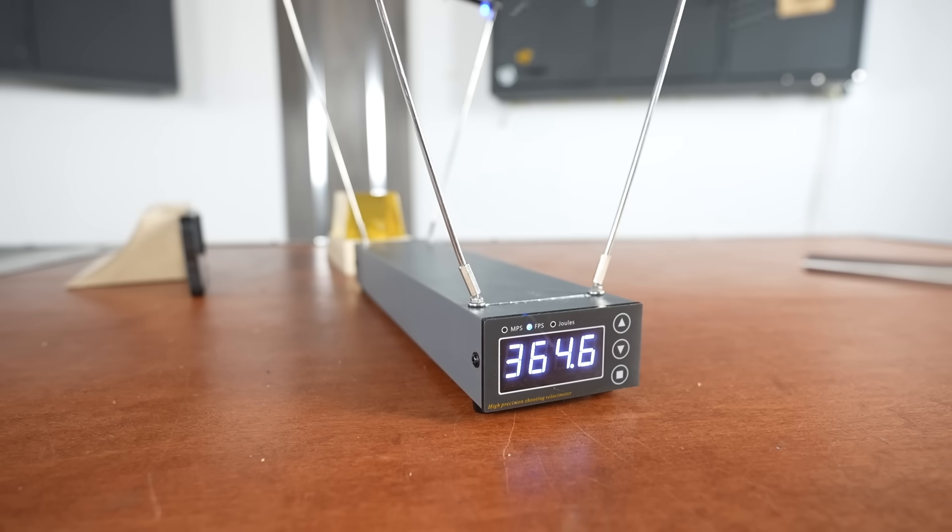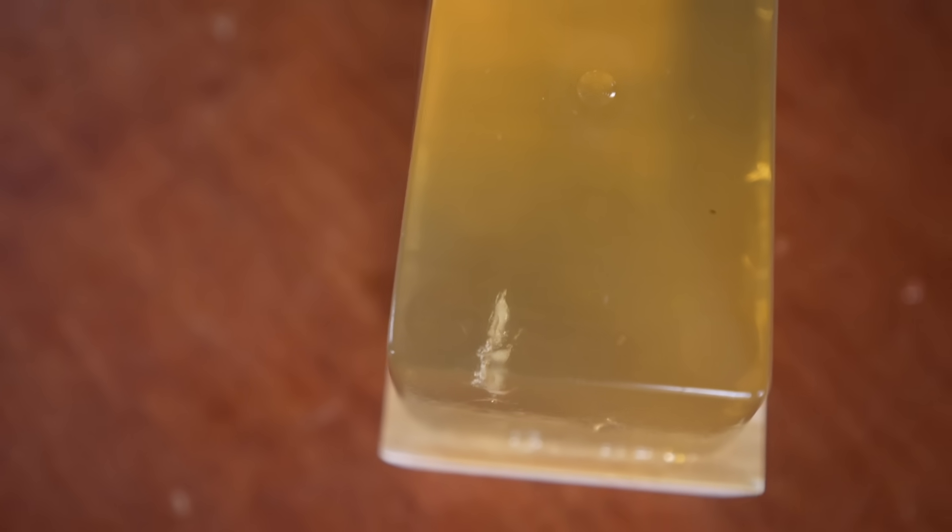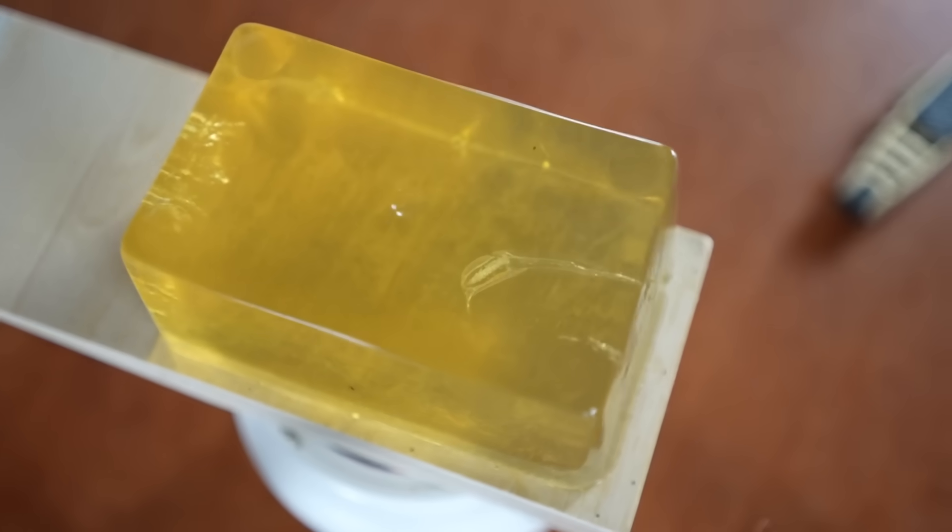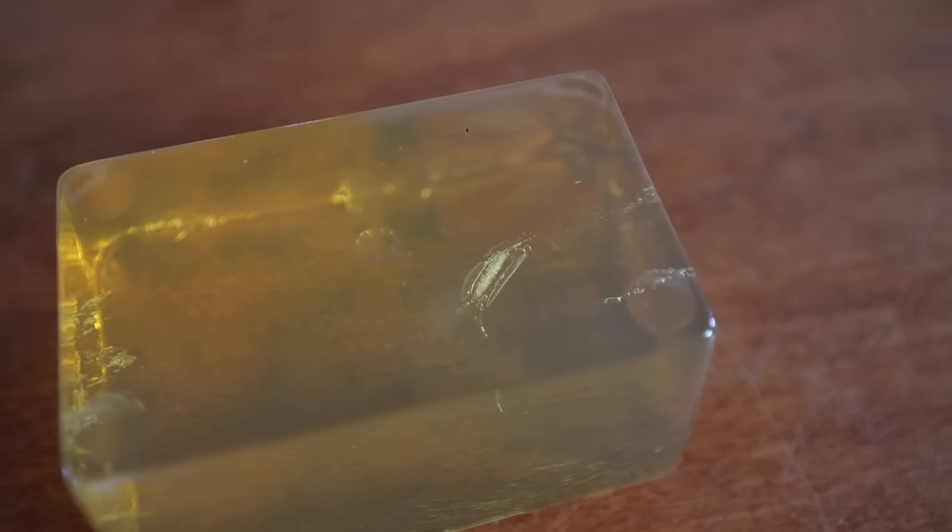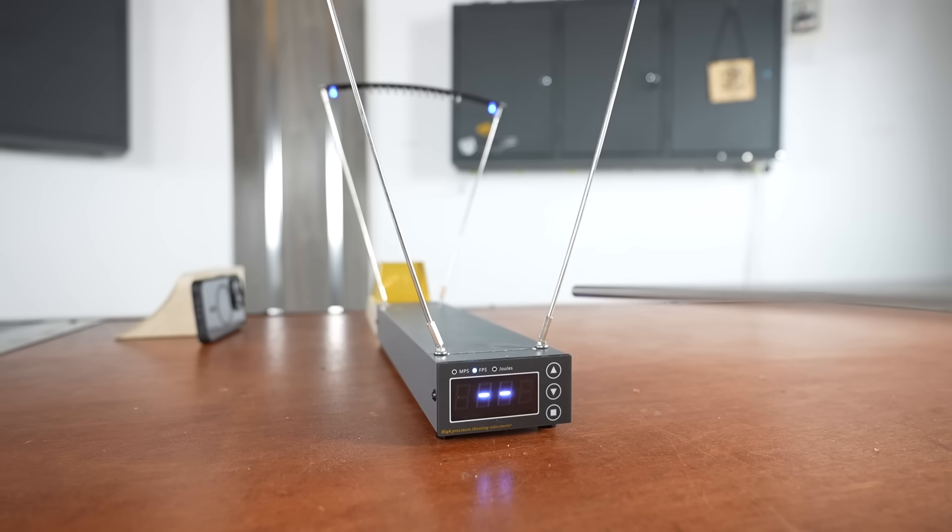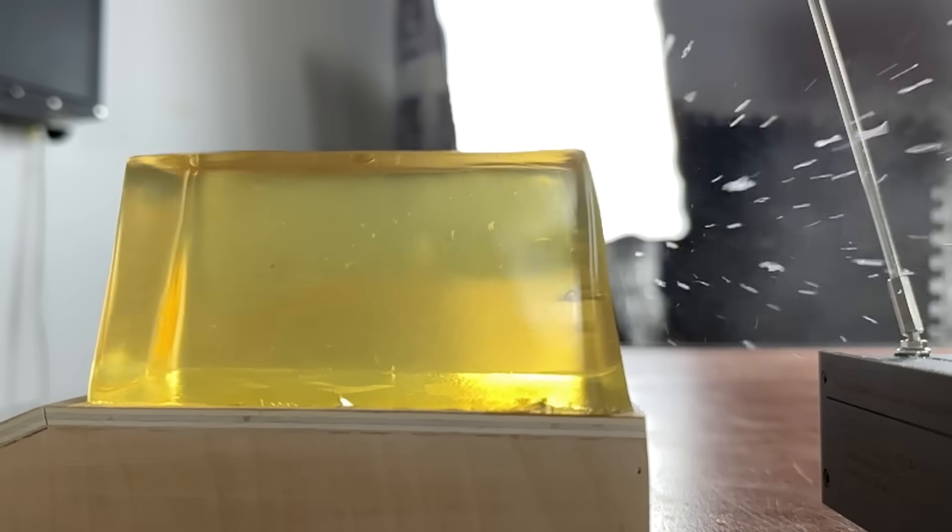After cooling the barrel with dry ice the ice had a similar speed but it was hitting the target noticeably straighter. I ended up doing another test without cooling the barrel and not a single piece of ice hit the gel straight.